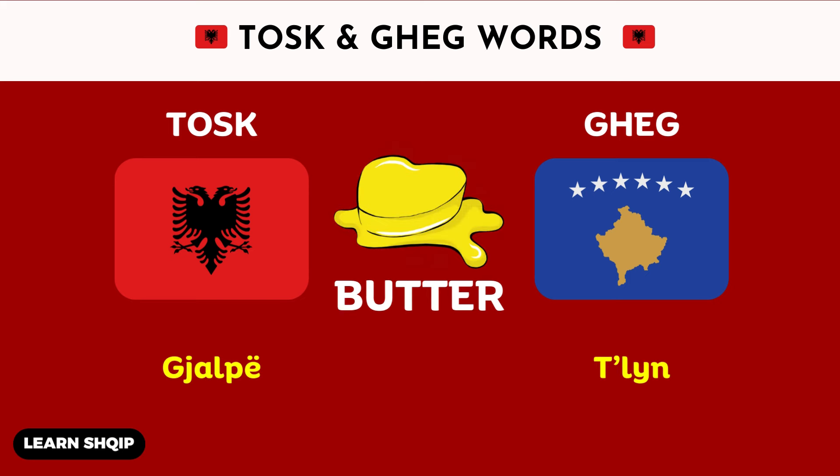And then we have the word butter. In the Tosk dialect, you will say Djalp. And then in Geg, you are going to change it to Tlün.